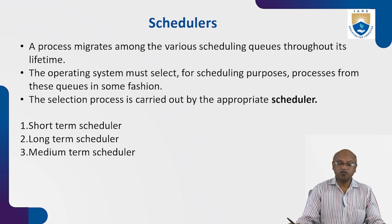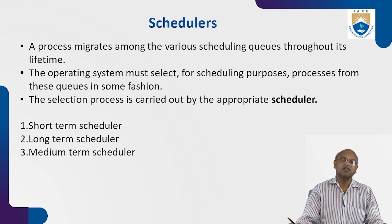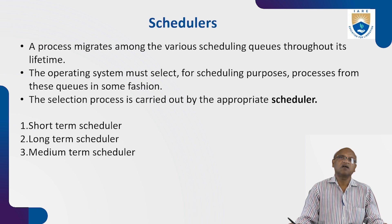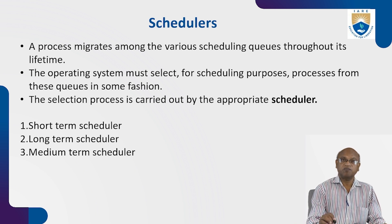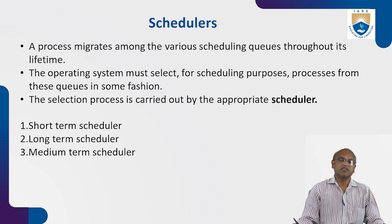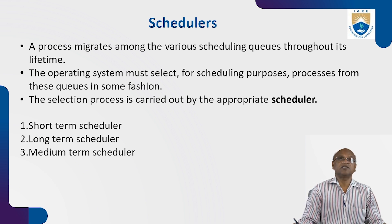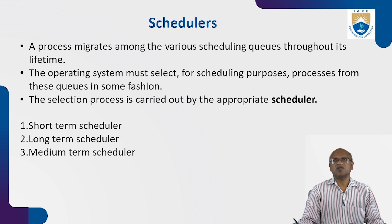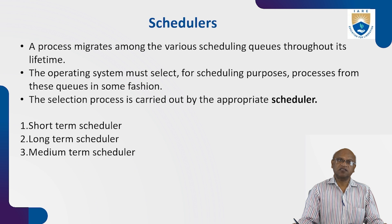The OS must select processes from the queues in some orderly fashion — instructions are brought to the CPU one by one. This selection process is carried out by the appropriate scheduler. The scheduler is a program in the OS responsible for deciding which process should be executed first. There are different types of schedulers: short-term, long-term, and medium-term schedulers.